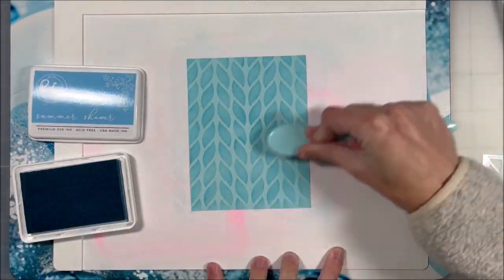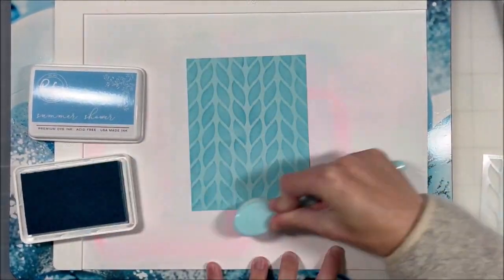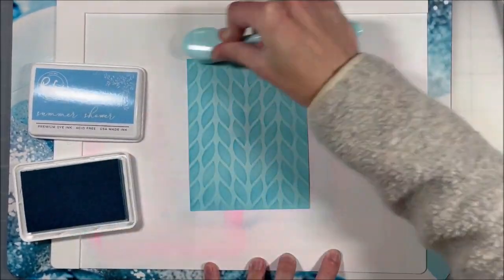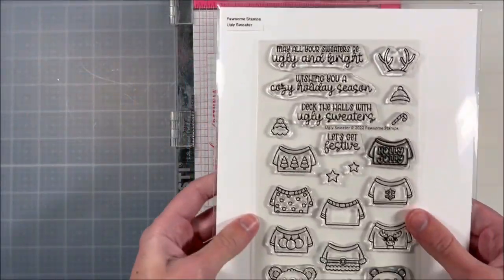Once I'm happy with the blending, I'm also going to go around the edges and just kind of create a soft halo. I find that this makes the center really pop and I really like the look of that.